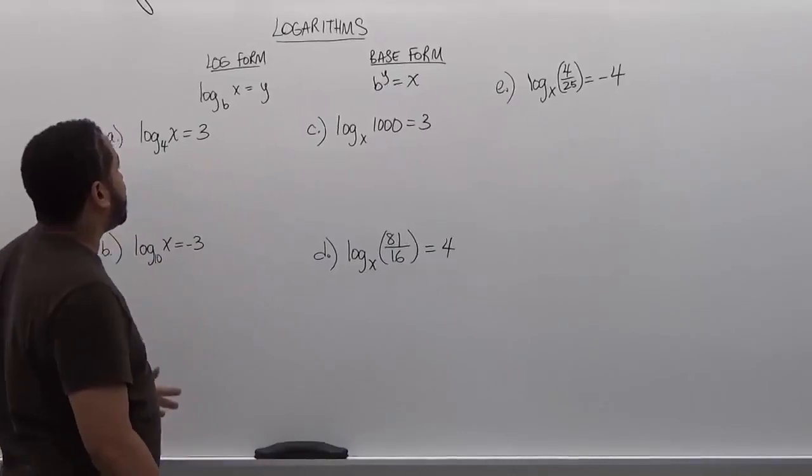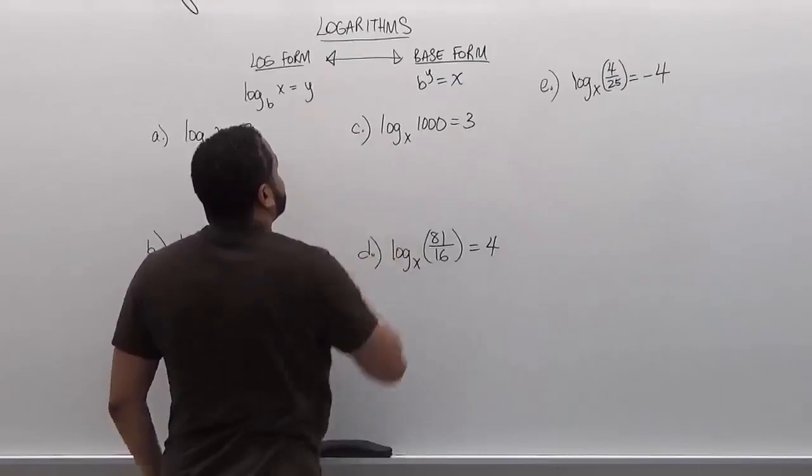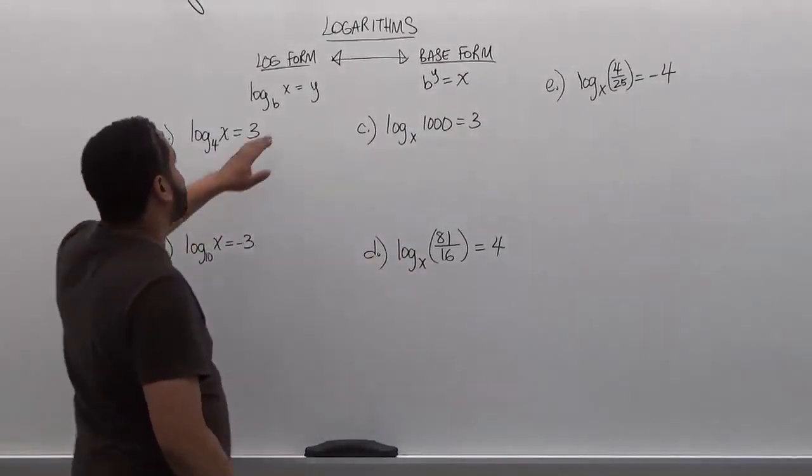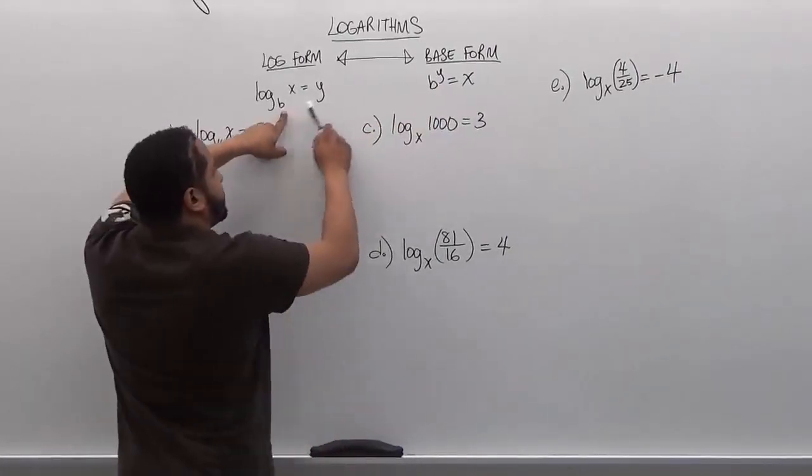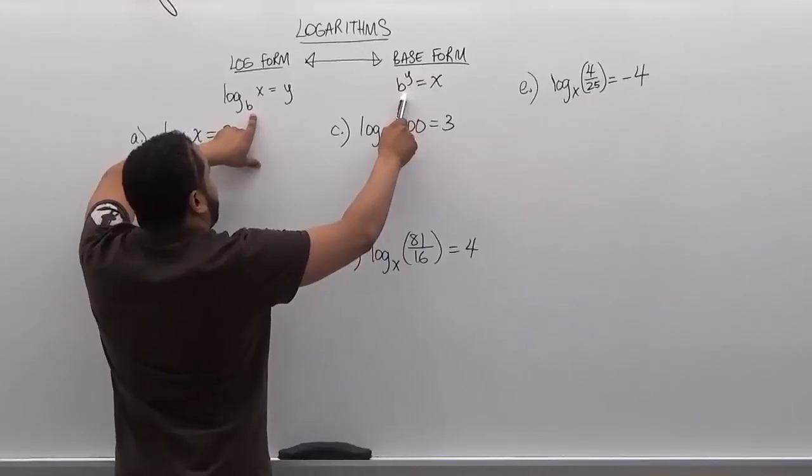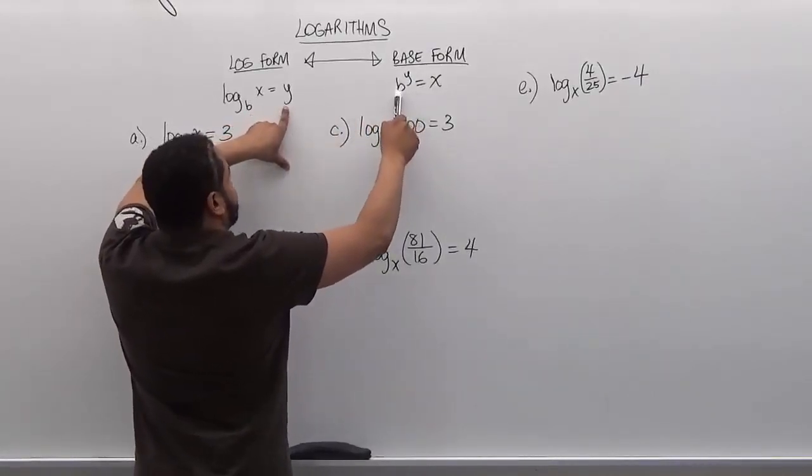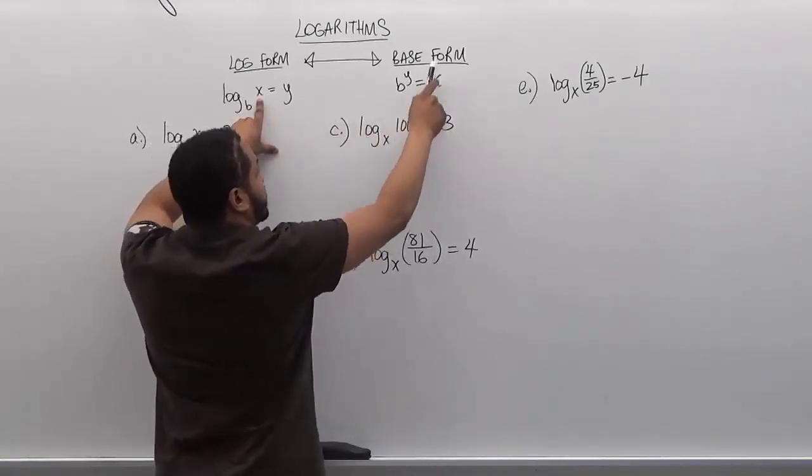When transforming something from log form to base form or vice versa, these values remain the same from one to the other. They easily exchange over. When transforming a log form to a base form, the base term becomes the base of the exponential term, the solution of the log is the exponent of the base form, and the term that we're taking the log of is the solution to the base form.